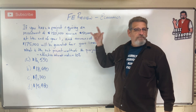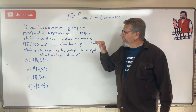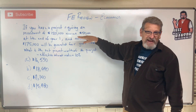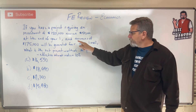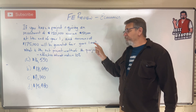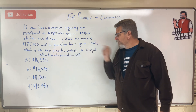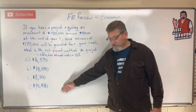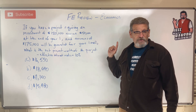Welcome back to FE review — engineering economics. If you have a project requiring an initial investment of $150,000 now and $150,000 at the end of year one, and revenues of $175,000 are generated for years one and two, what is the present worth of the project? Effective interest rate is 10%. Here are your choices — see if you can solve it. Press pause, ready, set, go.